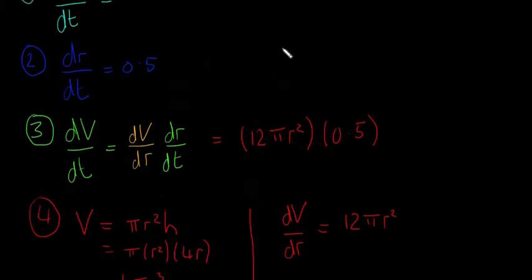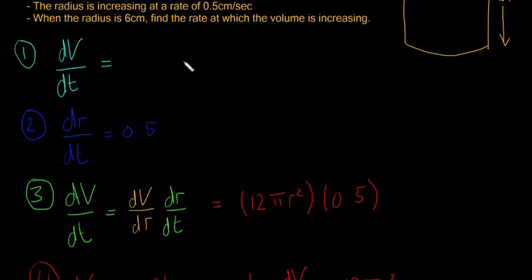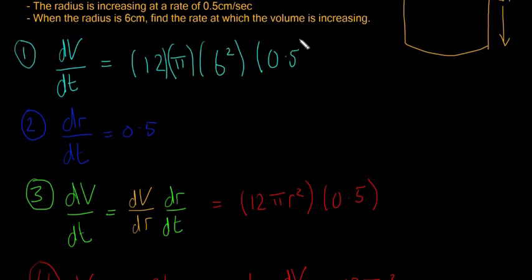So if we sub that into our dV/dt here, and we also know that the radius is six centimeters, we're going to have 12 by π, I'm going to put these all in separate brackets, by r squared, which is going to be six squared, by 0.5. Stick that all into your calculator, and you're going to get 216π centimeter cubed per second.